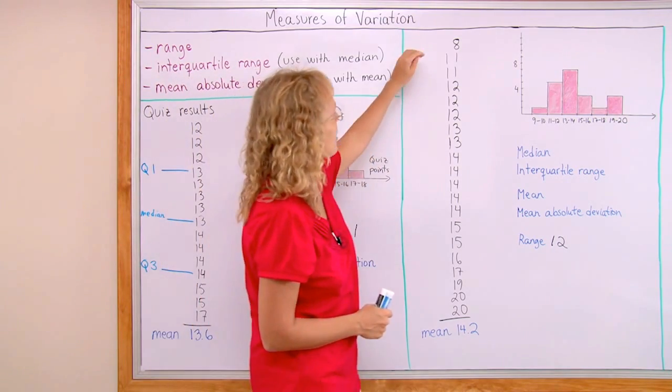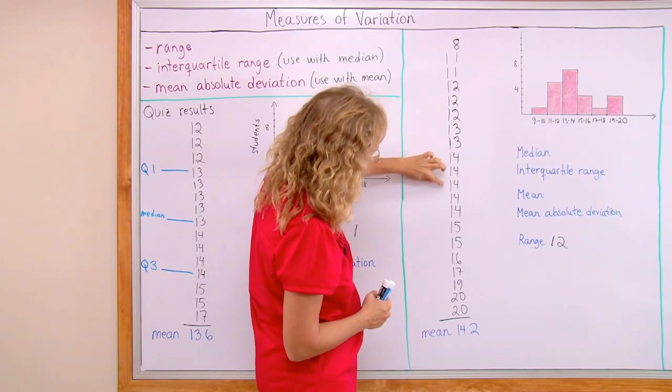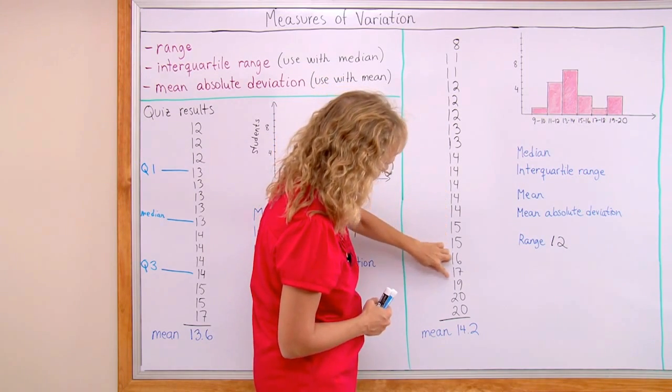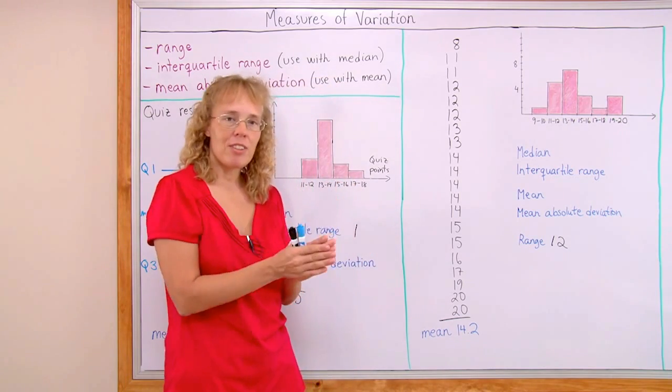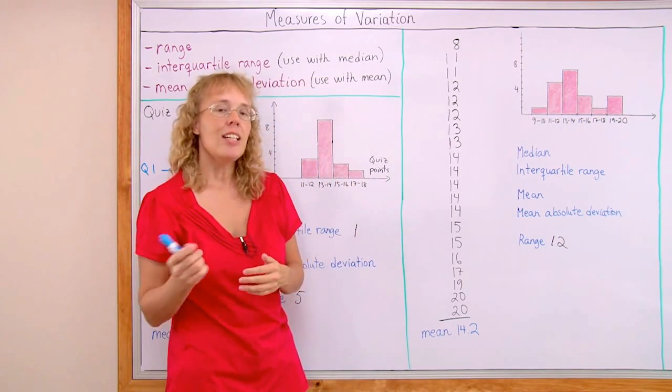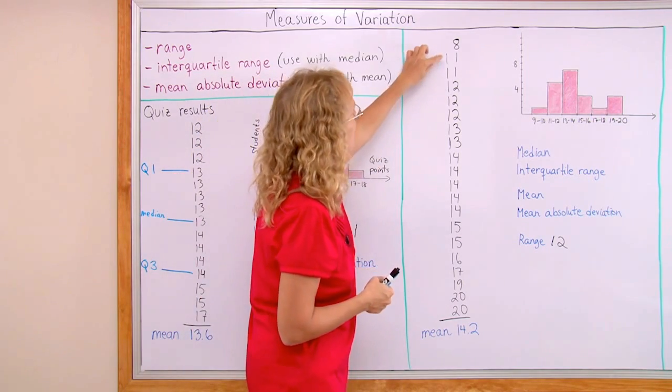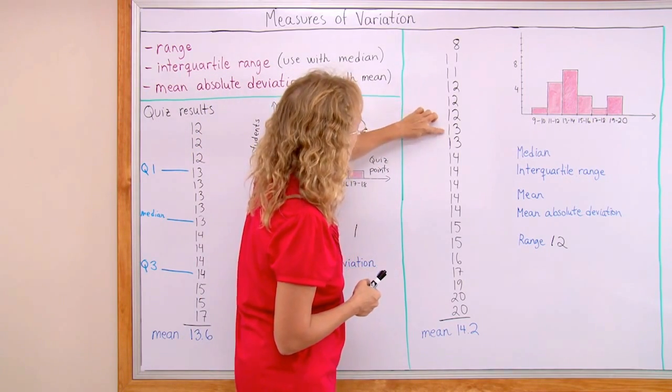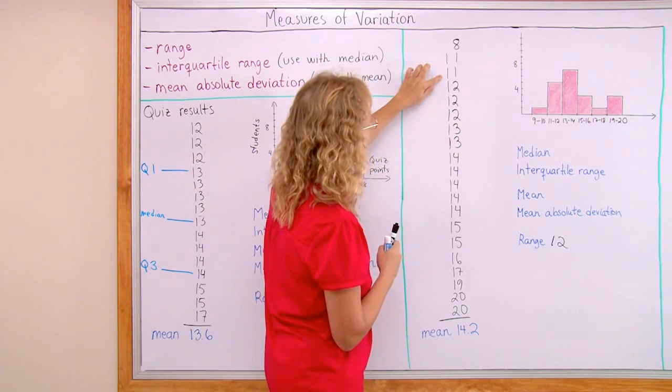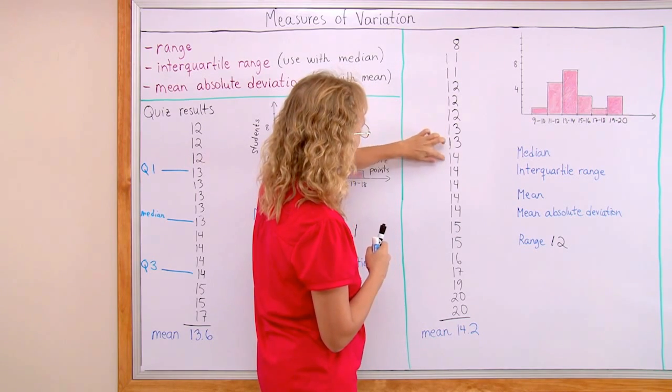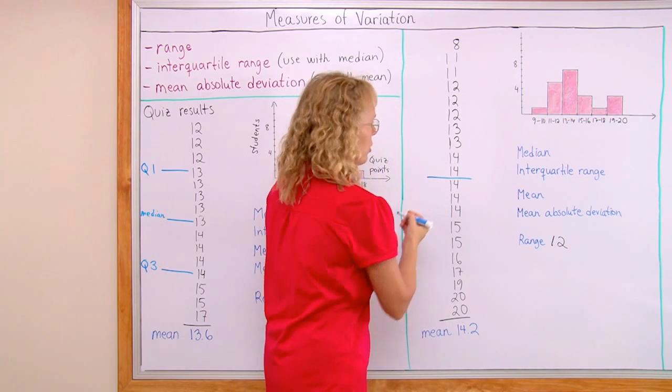Over here, we did the same. Let's count how many we have. 1, 2, 3, 4, 5, 6, 7, 8, 9, 10, 12, 13, 14, 15, 16, 17, 18, 19, 20 this time. So the median, OK, half of the data items is 10 and 10. The median will be the average of the 10th and 11th item here. 10 and 11th. Both are 14. The median is here. It is 14.